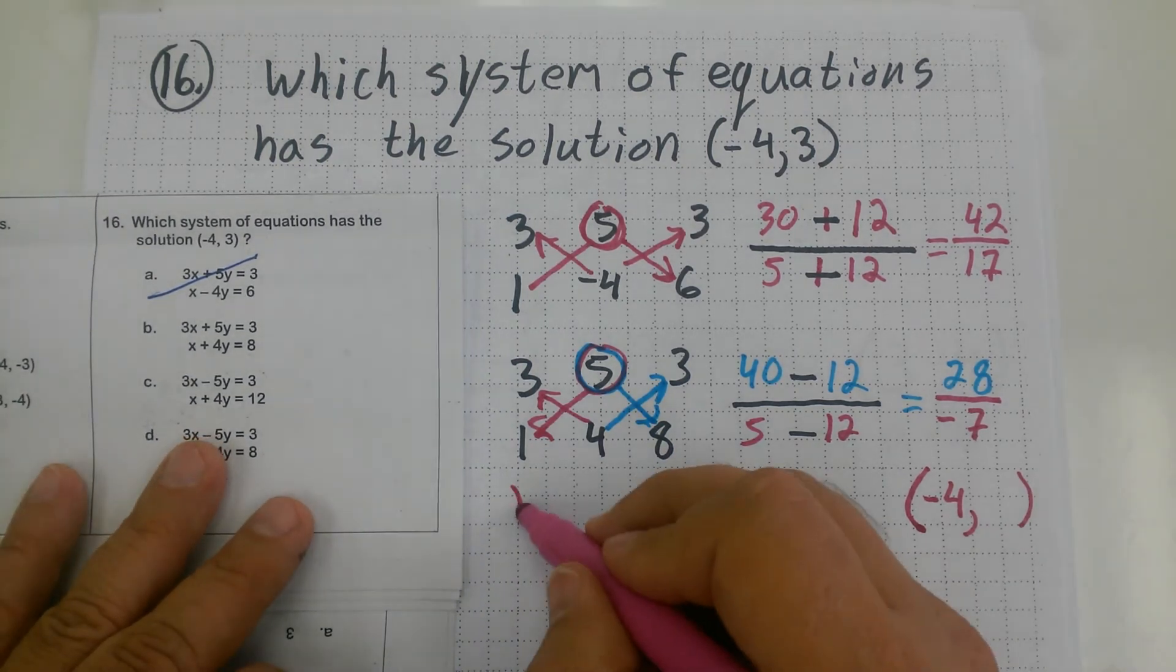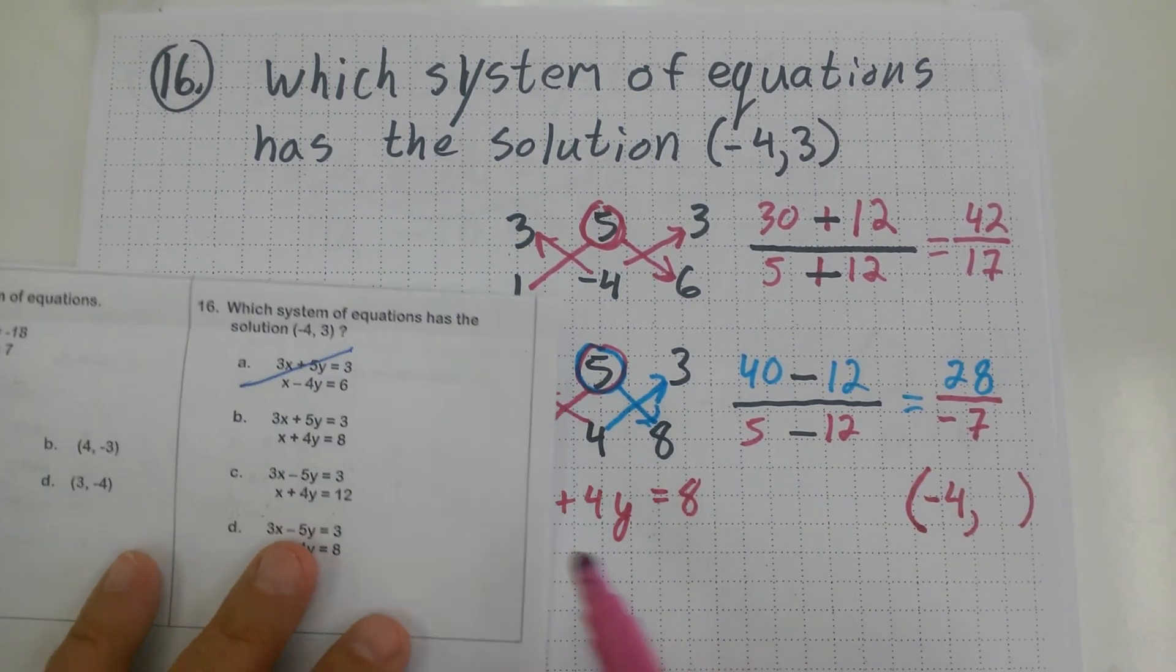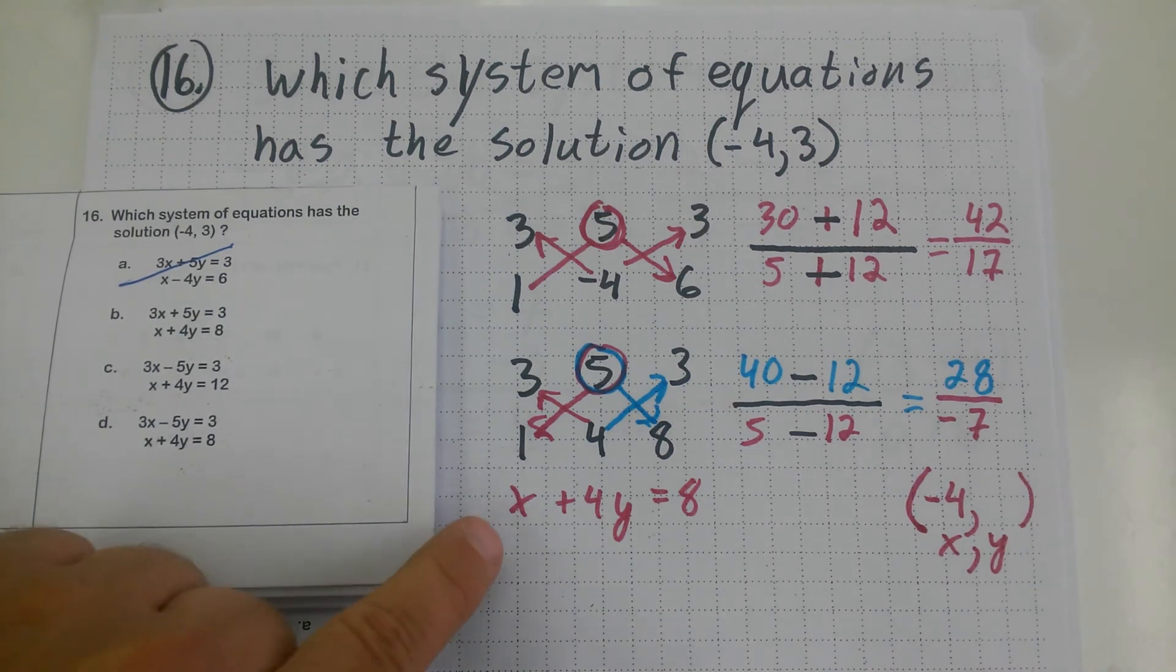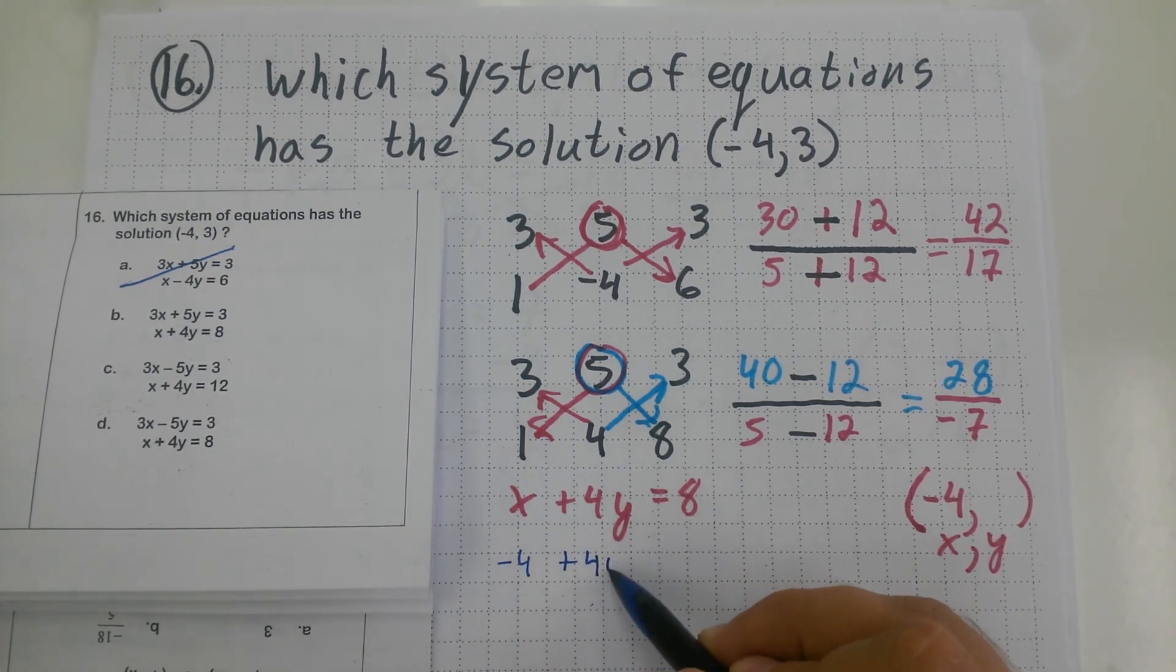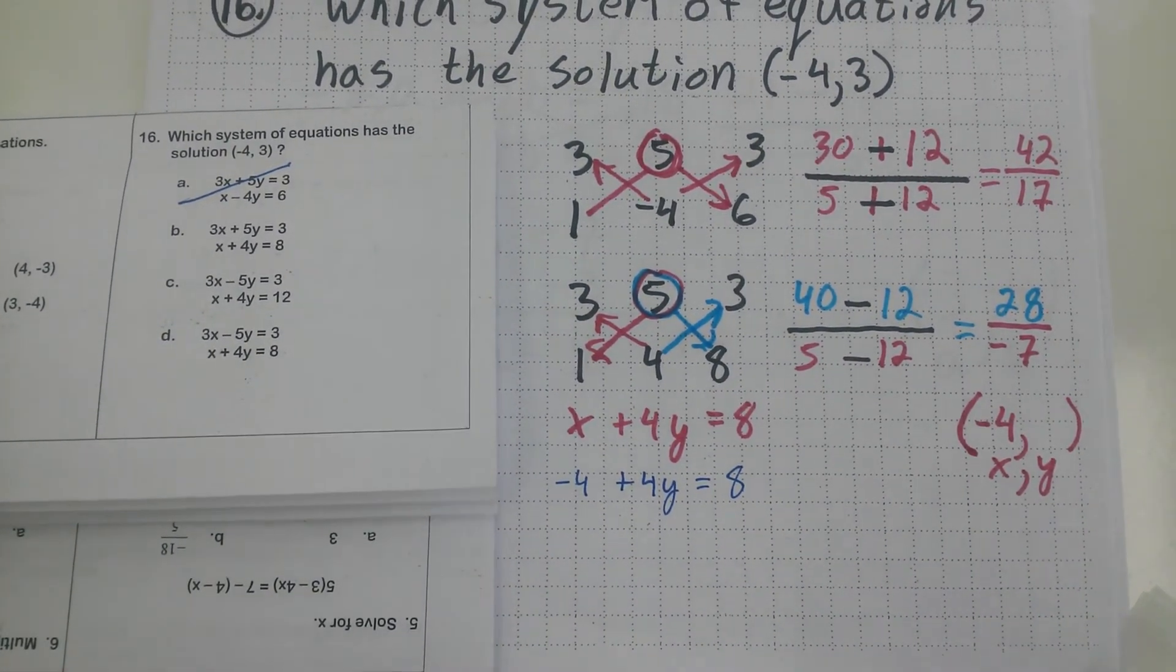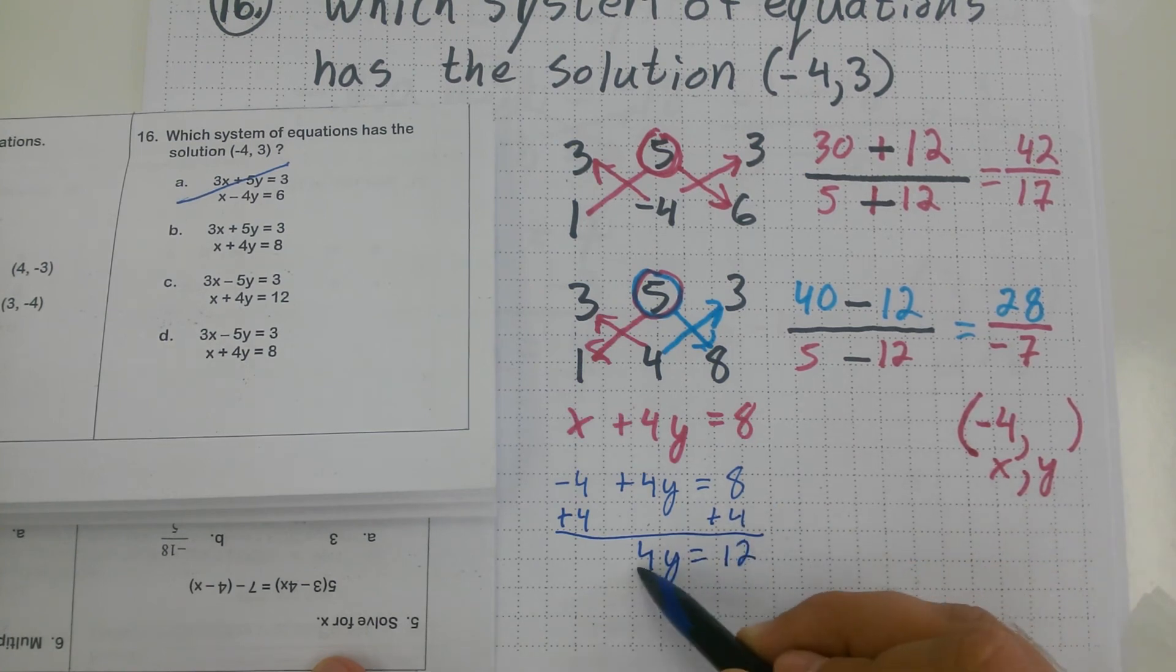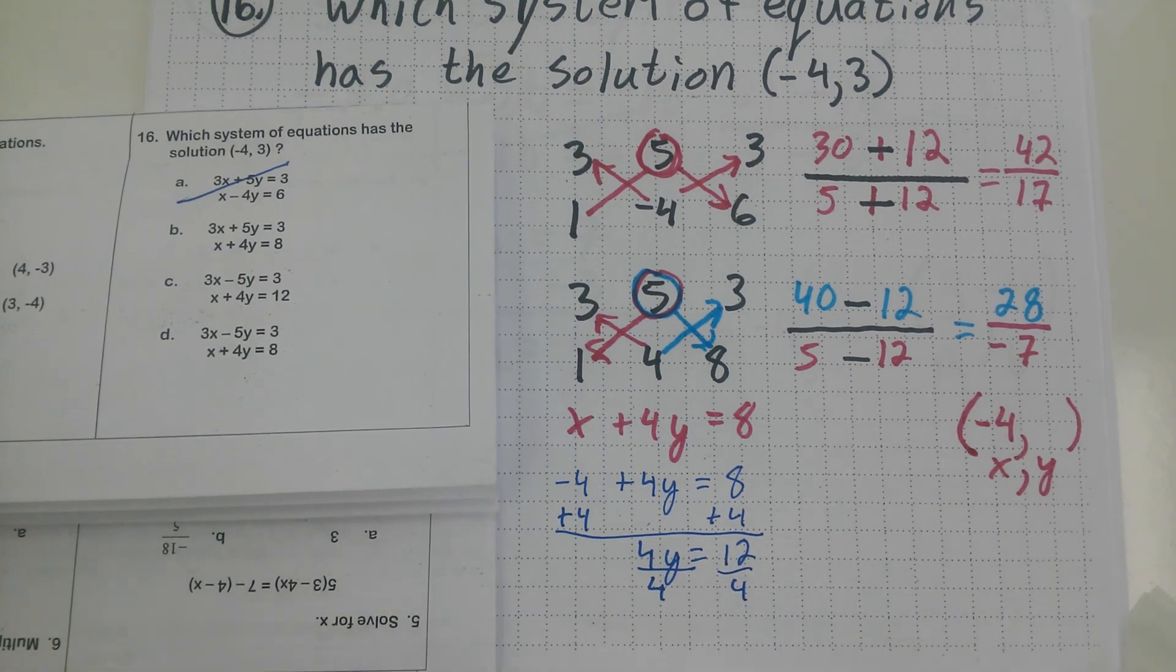So I'm going to take the X plus 4Y equals 8 from the bottom part of choice B. And I'm going to plug negative 4 in. What's X equal? Negative 4. So I substitute negative 4 in for X. And that gives me negative 4 plus 4Y equals 8. Now solving for Y, and don't forget, I'm looking for a 3. I add 4 to both sides. That's going to give me 4Y equals 12. And notice, when I divide both sides by 4, I get Y equals 3.